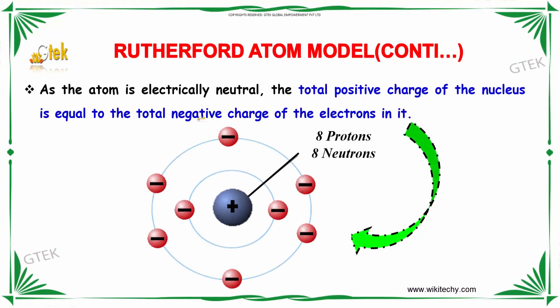As the atom is electrically neutral, the total positive charge of the nucleus is equal to the total negative charge of the electrons in it. It has eight protons and eight neutrons.